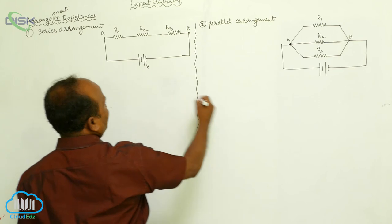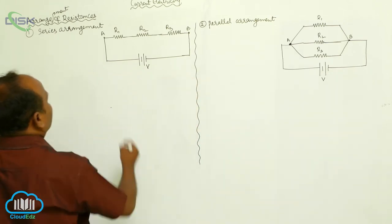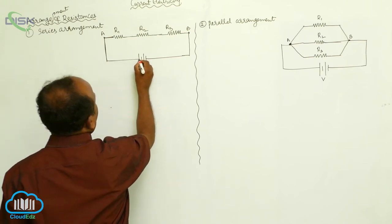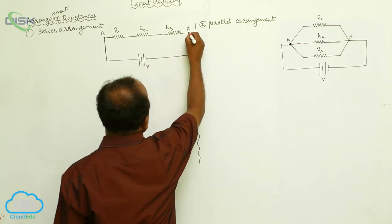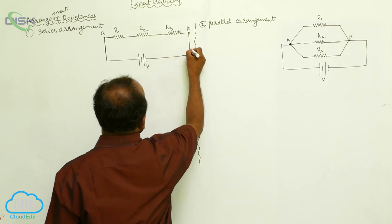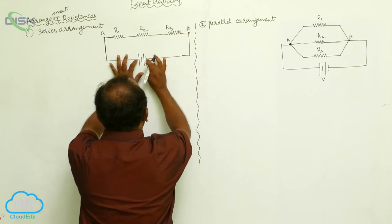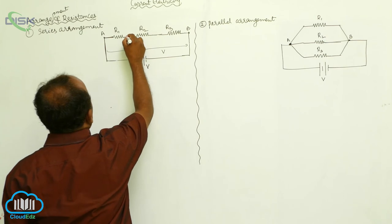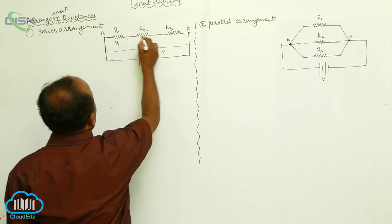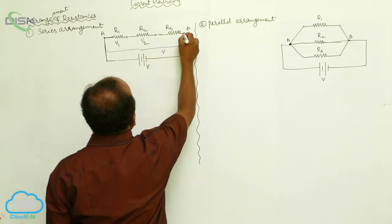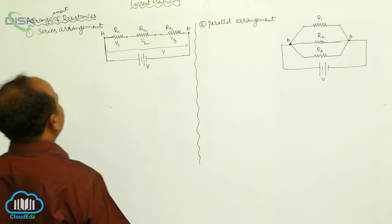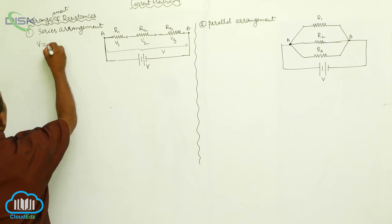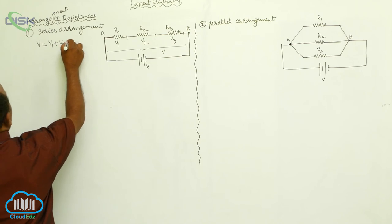What is the potential difference supplied? V. In the series circuit, the first terminal is connected to the positive terminal of the battery and the last terminal to the negative. The potential difference across the full circuit is V. Between individual resistances, the potential differences are V1, V2, and V3 respectively. The total potential difference V equals V1 plus V2 plus V3.